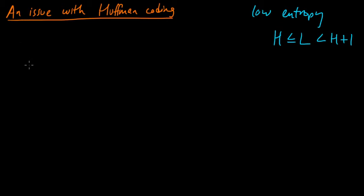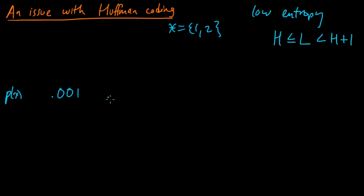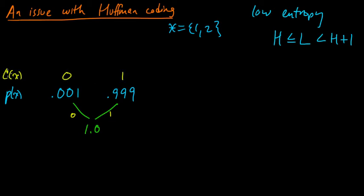Here's the example. Let's say we have the following probabilities, written in our usual way for Huffman. Our source has just a two-element set — only symbols 1 and 2. So we have two probabilities: 0.001 and 0.999. When we construct a Huffman code — you may already see what the optimal code is — there are only two symbols, so we add those and get 1.0. We get codewords 0 and 1. This is clearly the optimal code for a two-element source alphabet. The lengths are both 1.